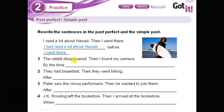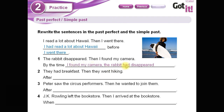Number one: 'The rabbit disappeared. Then I found my camera.' Por lo tanto, la acción que pasó primero es esta — la que debería estar en pasado perfecto. 'By the time I found my camera, the rabbit had disappeared.'